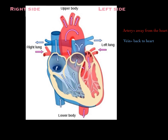We have two specific veins — one from the top and one from the bottom — responsible for bringing blood from the upper body and lower body and dumping it into our very first chamber. We call these the superior vena cava and the inferior vena cava. These two veins bring the blood from the body and dump it into this first chamber, which we call the right atrium.